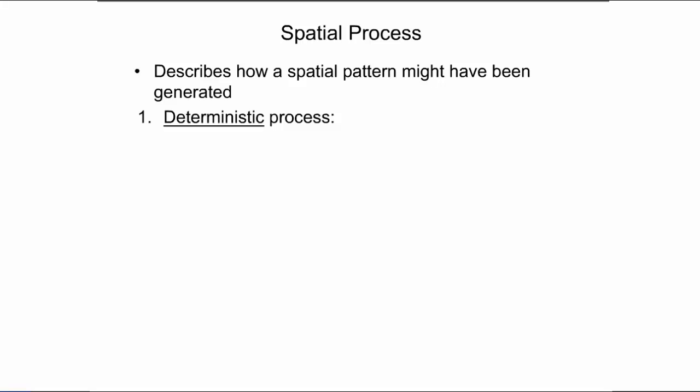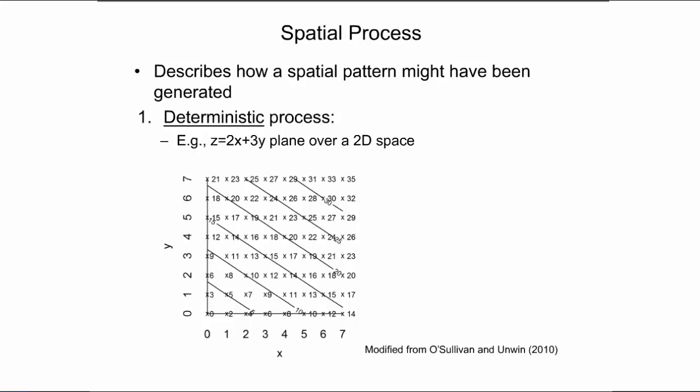In a deterministic process, the process description can typically be formulated through a mathematical equation. For example, in a plane with a perpendicular x and y axis, the equation z equals 2x plus 3y describes a spatial process that produces a numerical value for z at every location in the xy plane. The contours in the figure show that the surface z is a simple inclined plane rising from southwest to northeast across the mapped area. Such a spatial process always produces the same outcome at each location, and the figure shows the only possible realization of the process because it is deterministic.